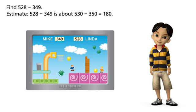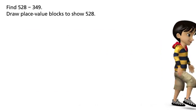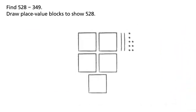Find 528 minus 349. 528 minus 349 is about 530 minus 350 equals 180. Draw place value blocks to show 528.